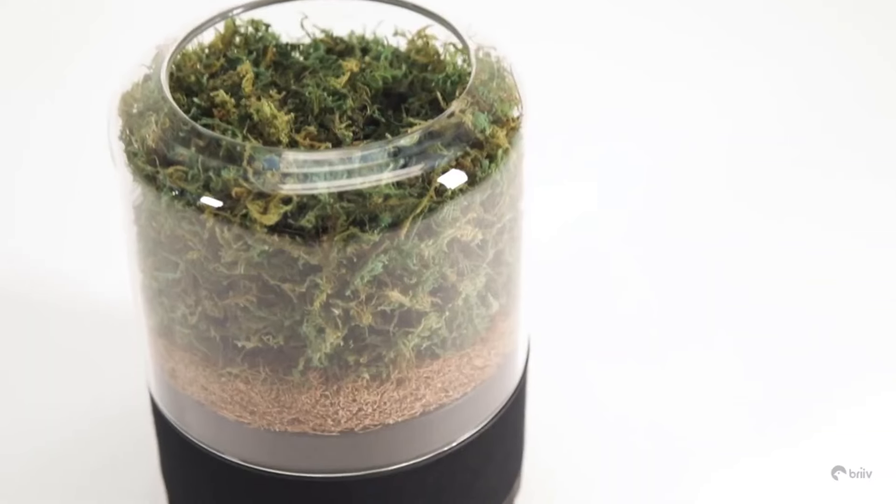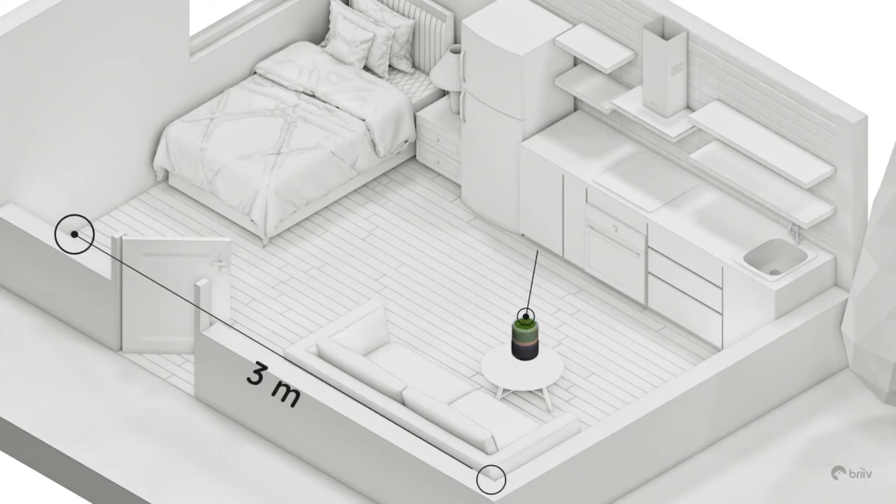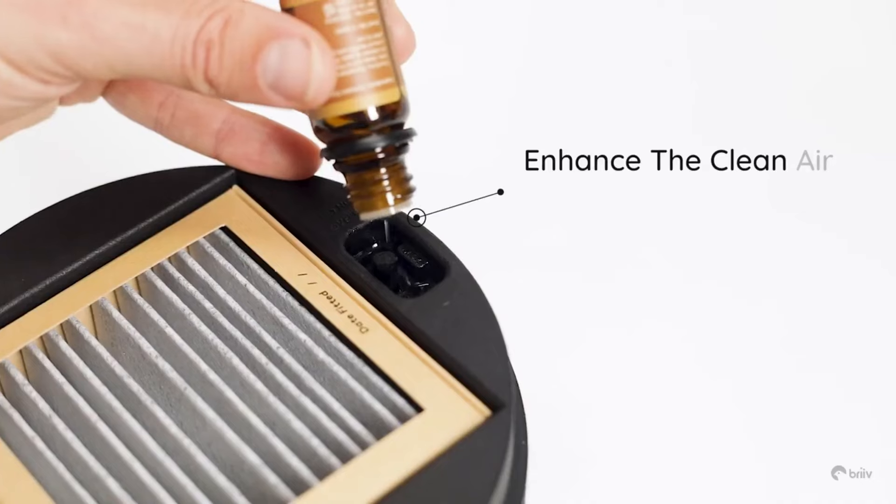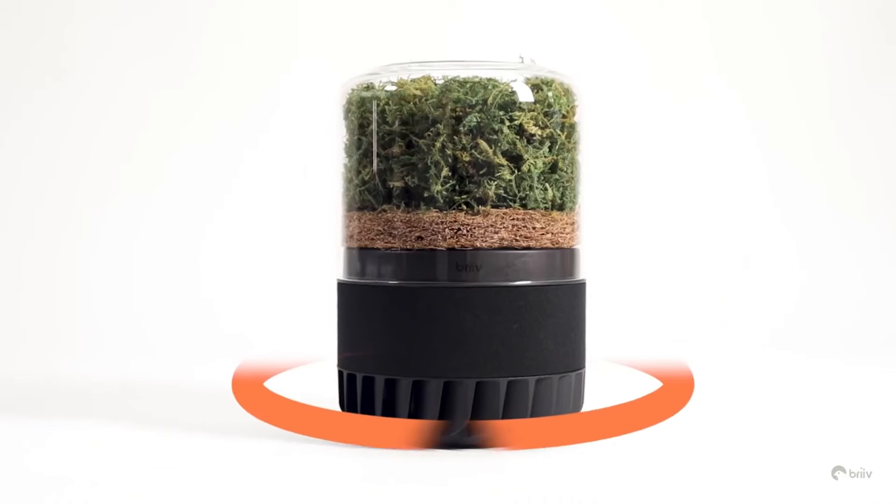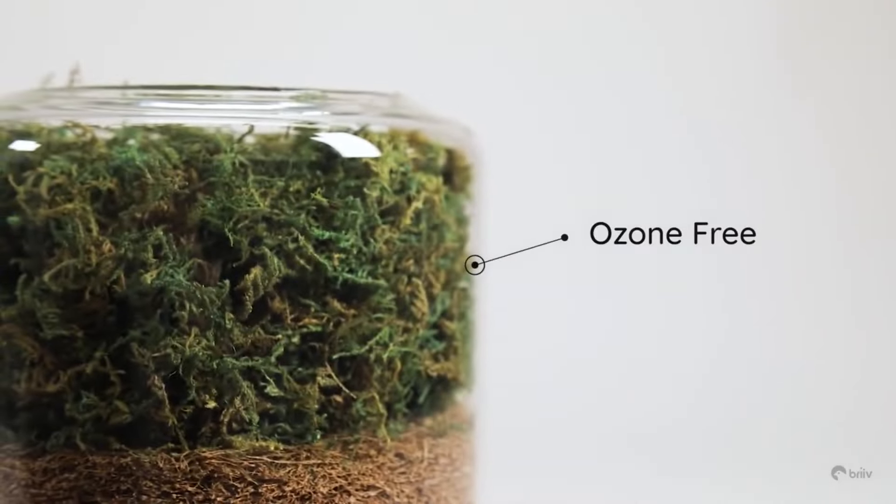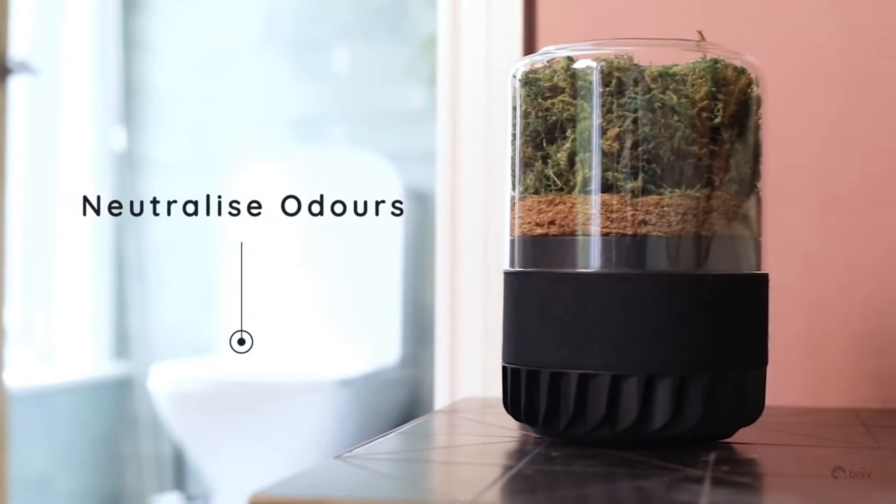In just 21 minutes, it cleans a 4x4 square meter space and can be linked with additional units for larger areas. You can also add essential oils for a personalized touch to the purified air. Breve Pro combines advanced technology with sustainability for informed air purification.